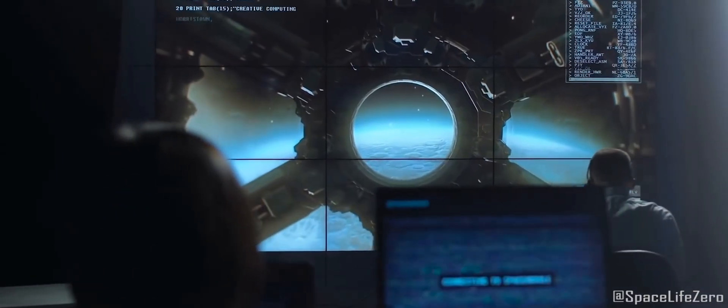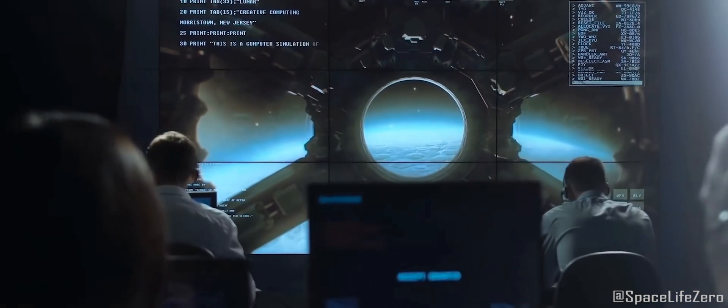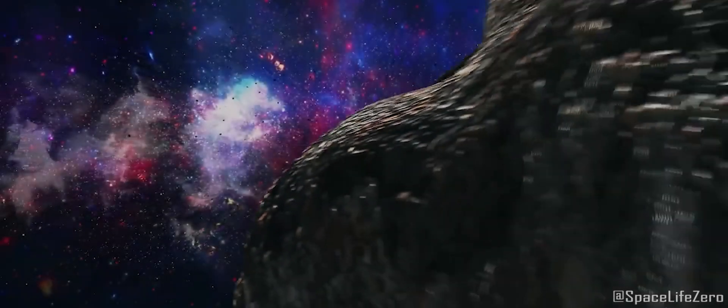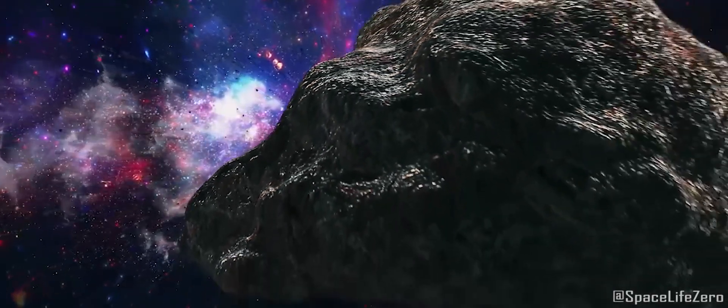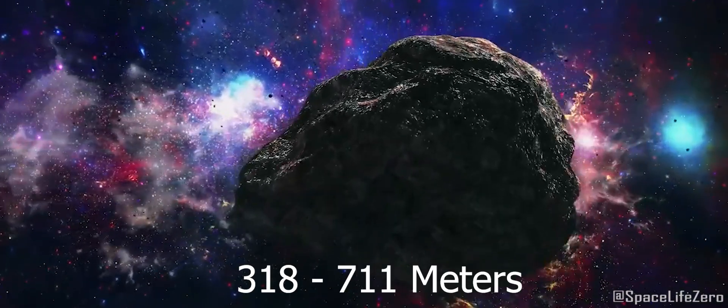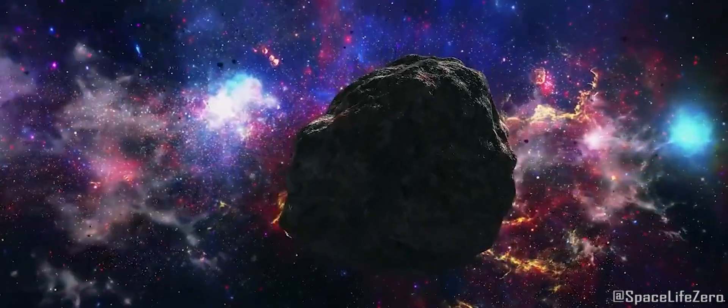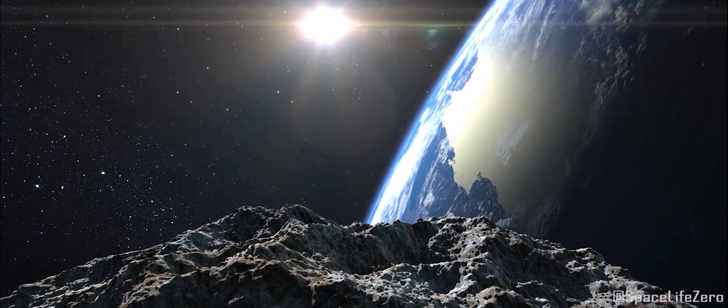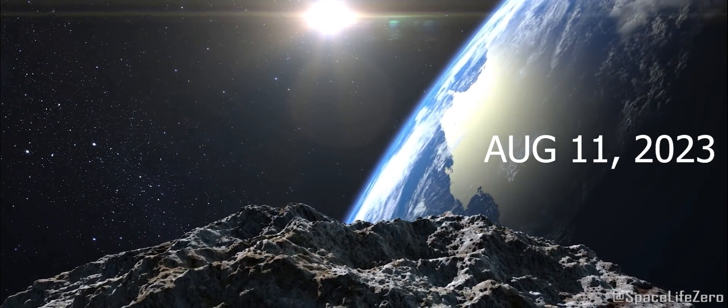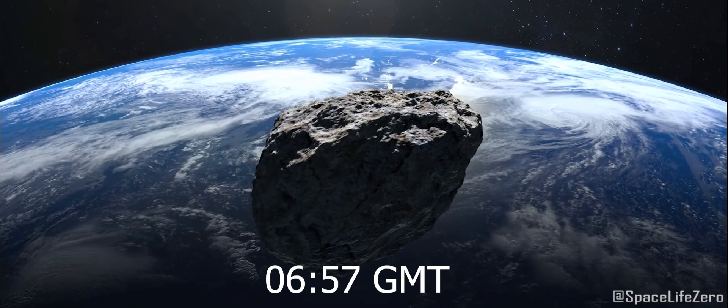According to information received from NASA's Jet Propulsion Laboratory, a potentially hazardous asteroid with size estimated in the range from 318 meters to 711 meters is heading towards our planet Earth on August 11, 2023, at 657 Greenwich Mean Time.